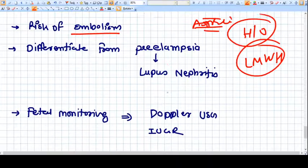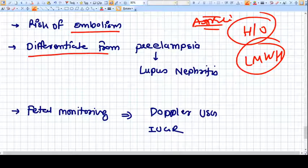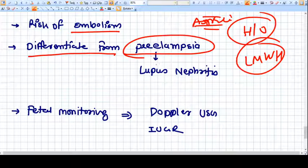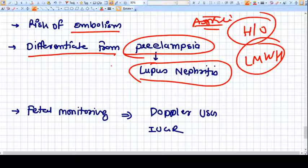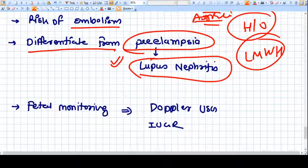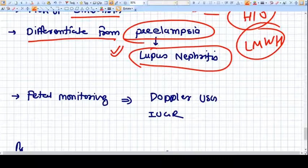Differentiate from preeclampsia and lupus nephritis that happens in SLE. It is very important because in both disorders there are similarities - both have increased blood pressure, hypertension, proteinuria, thrombocytopenia. So it's very important to differentiate, and you do this by testing for antibodies.